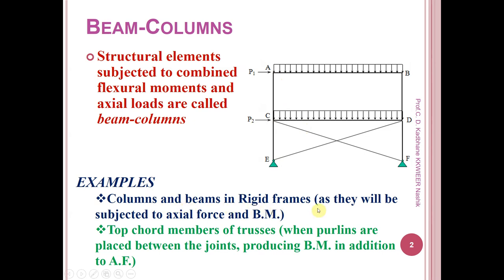For examples: columns and beams in rigid frames are subjected to axial force and bending moment. Top chord members of trusses — in case of top chord members of trusses, they are called rafters. When we place purlins in between the joints on the rafters, then the rafters will be subjected to axial forces as well as bending moment. That means rafters become a beam column when purlins are placed between the joints.